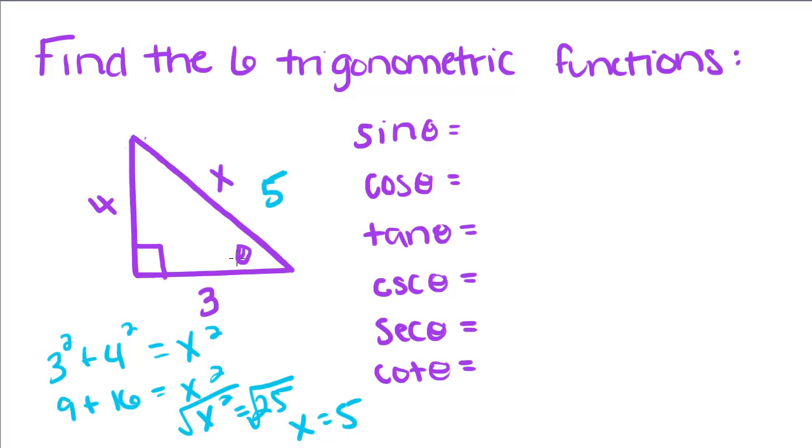So, we're talking about this angle right here. Sine of this angle equals opposite over the hypotenuse. So, we're going to put 4 over 5, if side 4 is across from this angle and X, which is 5, is the hypotenuse of this triangle. The hypotenuse is always across from this right angle.